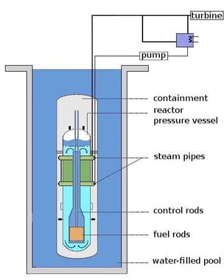In boiling water reactors, the fuel is similar to PWR fuel except that the bundles are canned — that is, there is a thin tube surrounding each bundle. This is primarily done to prevent local density variations from affecting the neutronics and thermal hydraulics of the nuclear core on a global scale. In modern BWR fuel bundles, there are either 91, 92, or 96 fuel rods per assembly depending on the manufacturer. A range between 368 assemblies for the smallest and 800 assemblies for the largest US BWR forms the reactor core, and each BWR fuel rod is back-filled with helium to a pressure of about 3 atm.